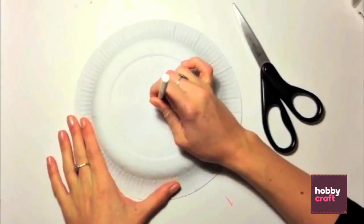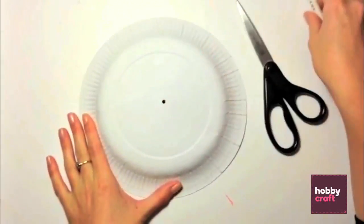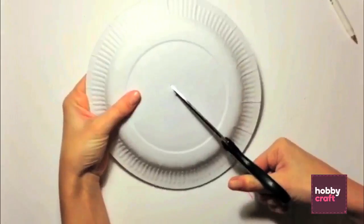Begin by taking one of your plates and piercing a hole in the middle with a pen. Then make 4 cuts out from the hole to the rim.